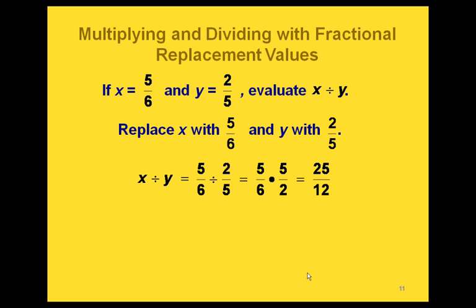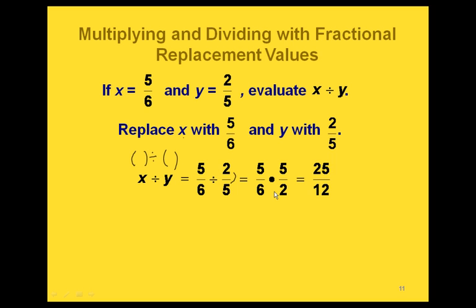We can also multiply and divide with fractional replacement values. Let's look at an example where we're dividing x by y, replacing x with 5 sixths and y with 2 fifths. Writing our parentheses in, we replace x with 5 sixths and y with 2 fifths, then change to a multiplication problem by flipping over the second fraction — the 2 fifths. This gives us 5 times 5 on the top and 6 times 2 on the bottom, and we end up with 25 twelfths.